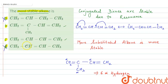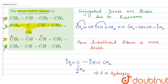Now for option C — CH2=CH-CH=CH2 — the adjacent alpha carbons give only two plus one, so three alpha hydrogens, meaning only three hyper conjugating structures. So option C will be less stable. The most stable alkene is option B: CH2=C(CH3)-CH=CH2, due to more hyper conjugation. Therefore the answer is option B.